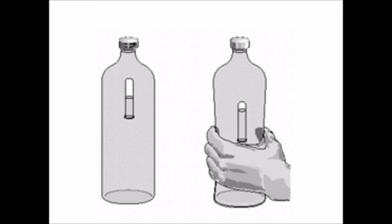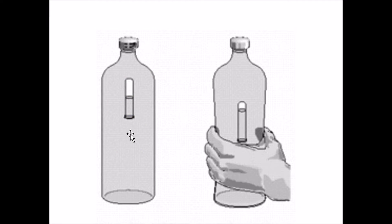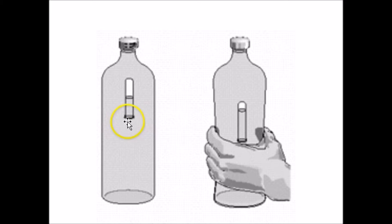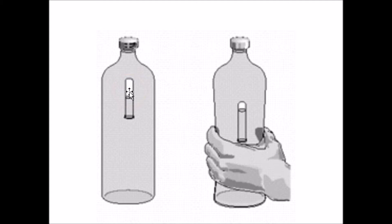I want to thank science advisor Steve for his comments. We have the glass test tube, which has a certain volume and displaces water, and we have the air bubble, which also has a certain volume and displaces water. There are four forces associated with the glass-air system: the mass of the glass produces a downward gravitational force — mass of glass times acceleration due to gravity — and the mass of the air, which is unchanging as you change the pressure, produces a downward force equal to the mass of air times gravity.